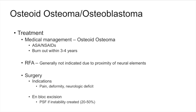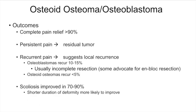Surgery is indicated for persistent pain with non-operative management, deformity, and neurologic deficit. En bloc excision is recommended more for osteoblastomas, and some advocate for it with osteoid osteomas given the high recurrence rate with local debridement alone. Osteoblastoma has a very high rate of local recurrence at 10–15%, while osteoid osteomas are lower. Scoliosis improves in about three-quarters of cases; if the scoliosis has been long-standing prior to excision, the chance of improvement is lower.